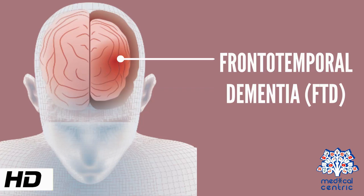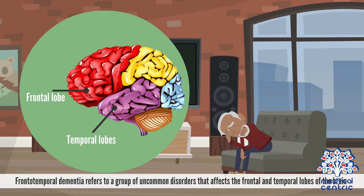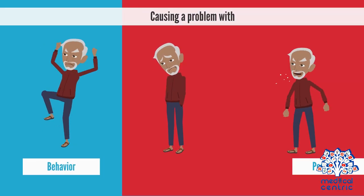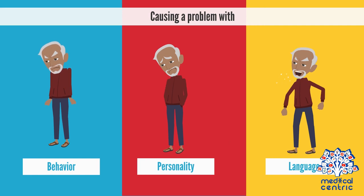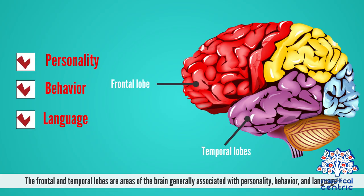Today's topic is frontotemporal dementia, or FTD. Frontotemporal dementia refers to a group of uncommon disorders that affects the frontal and temporal lobes of the brain, causing a problem with behavior, personality, and language. The frontal and temporal lobes are areas of the brain generally associated with personality, behavior, and language.